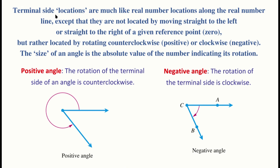Terminal side locations are much like real number locations along the number line, except they're not located by moving straight left or right, but rather by rotating either counterclockwise — which is considered the positive direction for angles — or clockwise, which is considered the negative direction. The size of an angle will be the absolute value of the number indicating the rotation.